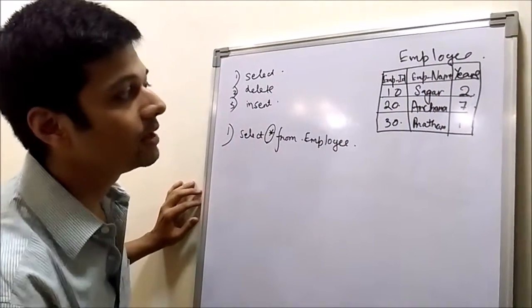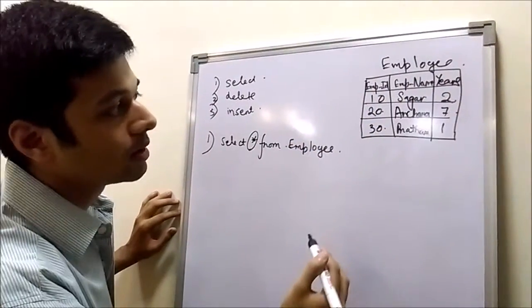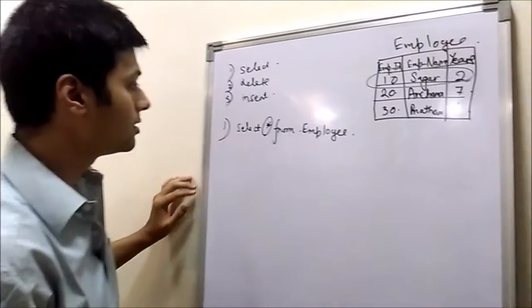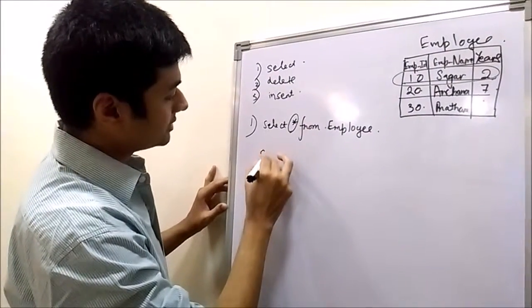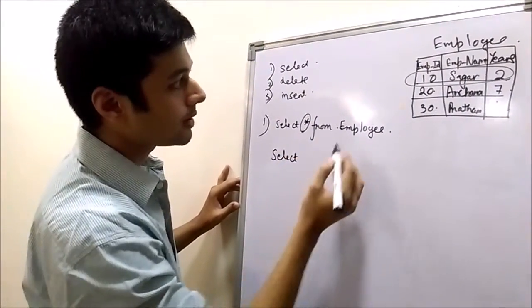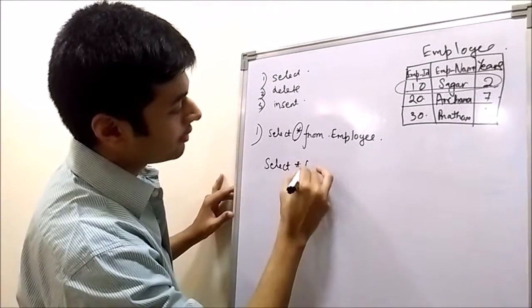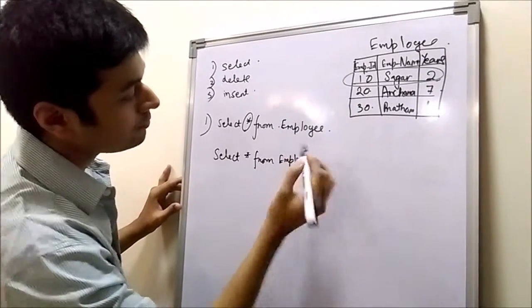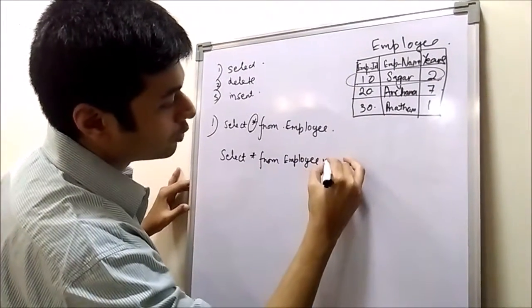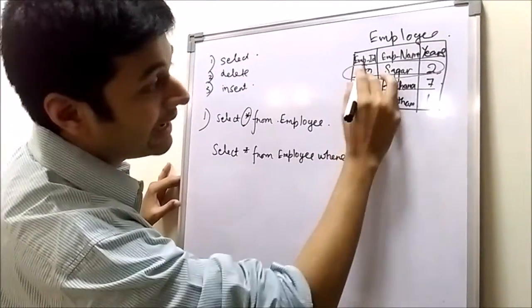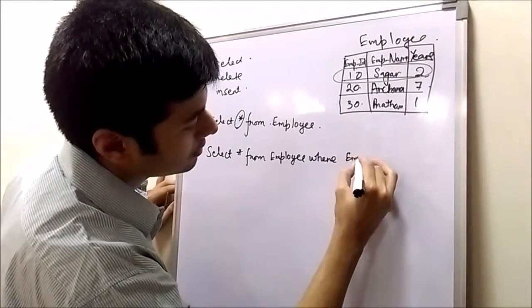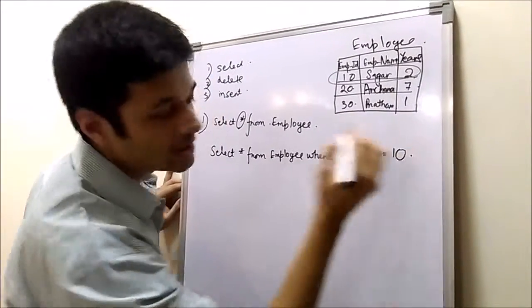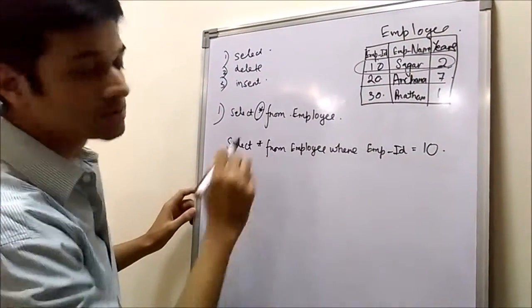Suppose specifically we want some particular value, like we want this row to be displayed. So we will write select star from table name, which is employee, where empid equals to 10. So this is all about select.